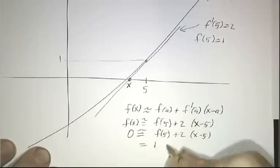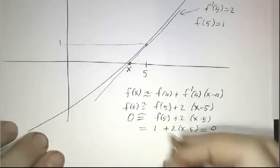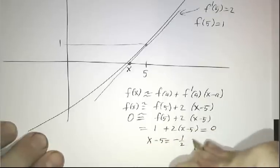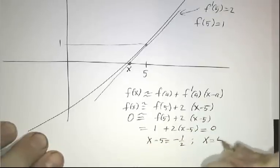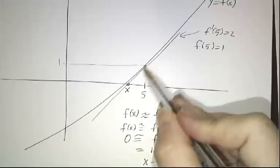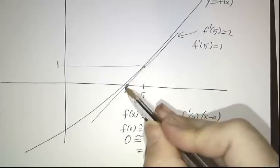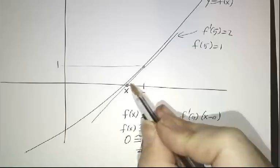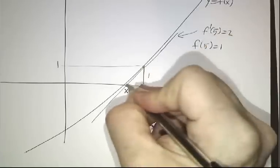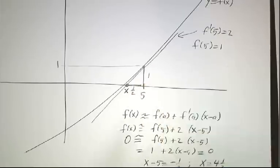So this is 1 plus twice x minus 5 is 0. So x minus 5 is minus 1 half. Or x is 4 and 1 half. If you're at 5 and you're climbing at a rate of 2, then approximately 1 half ago you cross through the origin. This height is 1. This width is 1 half. The slope, which is rise over run, is 2.